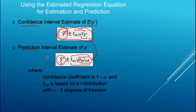When doing these confidence intervals, we consider the confidence coefficient one-minus-alpha. Standard choices are a 99% confidence interval with alpha equal to 1%, a 95% confidence interval with alpha equal to 5%, or a 90% confidence interval with alpha equal to 10%. The t-value used in these formulas comes from the t-distribution with n minus 2 degrees of freedom, just as when doing the t-test.